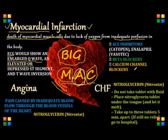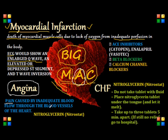Let's continue and look at A in our Big MAC — A stands for Angina Pectoris. It's basically pain caused by inadequate blood flow to the blood vessels of the heart. Our patient would usually describe the pain as a squeezing, heavy discomfort or pressure. Pain is the number one symptom for a patient with Angina Pectoris, and it's a substernal pain that can radiate to the neck, the jaw, and the back.